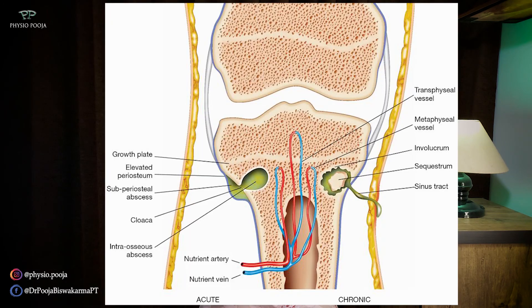In the pathoanatomy of osteomyelitis, the metaphysis of long bones is the most affected site because it is a highly vascularized zone where vessels are arranged in the form of a loop. The blood stasis resulting from this arrangement is responsible for the metaphysis being the favourite site for bacteria to settle, making it the most common site for osteomyelitis.